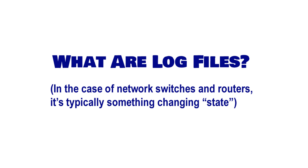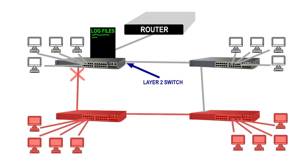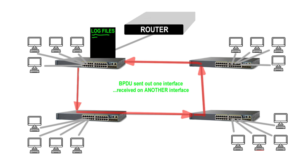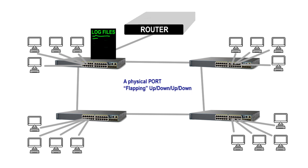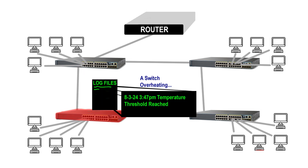Let's take a layer 2 switch for example. Most brands of layer 2 switch have the capability of holding 200 to 300 log file entries for any changes or issues they experience or detect. Examples include: an interface that was up suddenly going down or losing connectivity; a loop being created and the switch detecting spanning tree BPDUs arriving on a different interface than the one they were sent out on; a large number of new MAC addresses being learned; a port flapping — going up and down repeatedly; or the switch overheating or experiencing a sudden large bottleneck of traffic. We could go on and on with this list of state changes recorded into these log files.